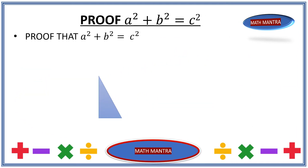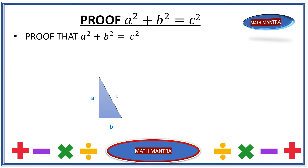So in order to prove the Pythagorean theorem, let's draw a right angle triangle. Let's label the sides A, B, and C, where C is our hypotenuse. A and B are the vertical and horizontal sides, forming a 90-degree right angle.